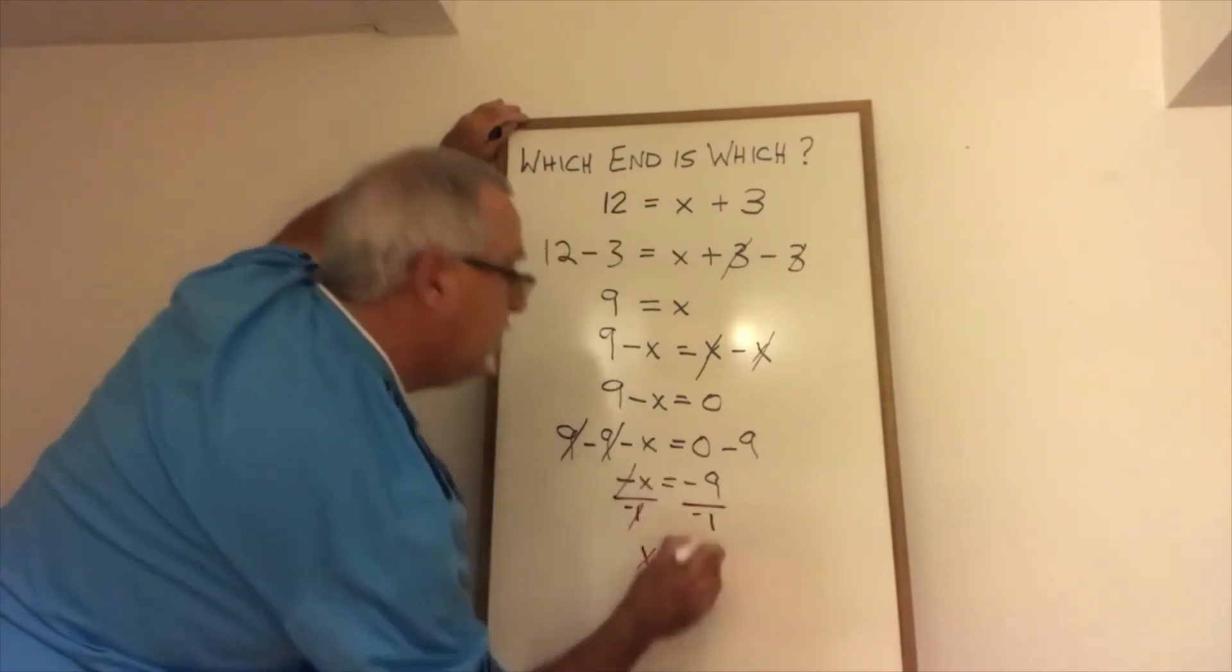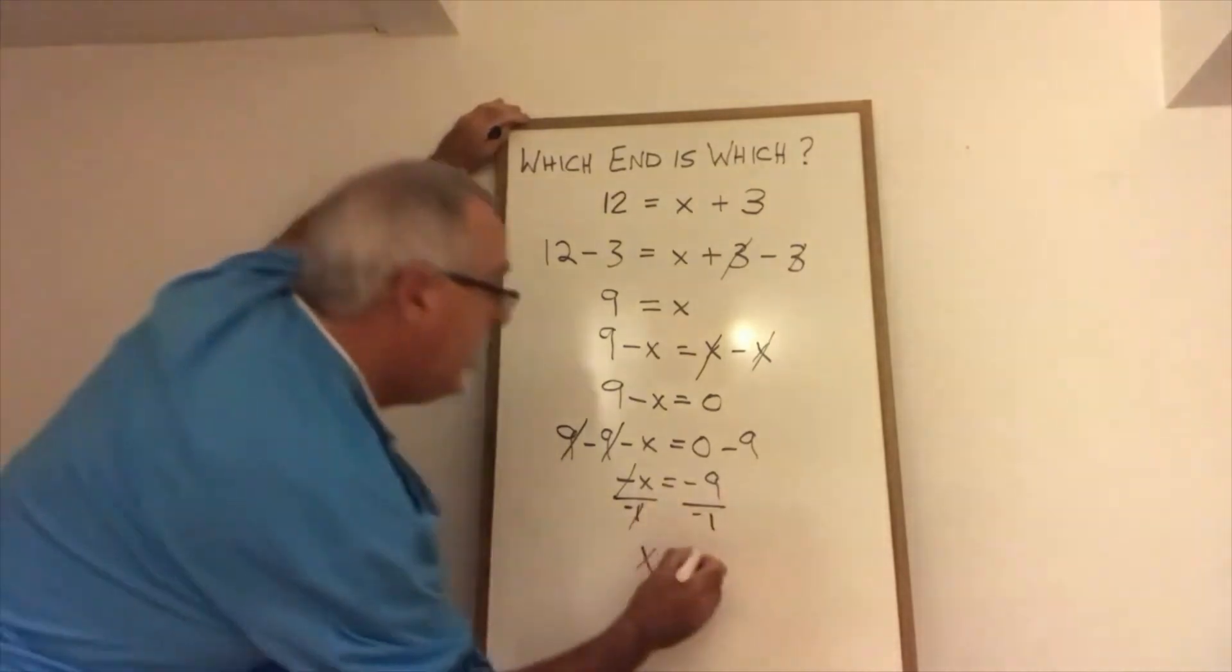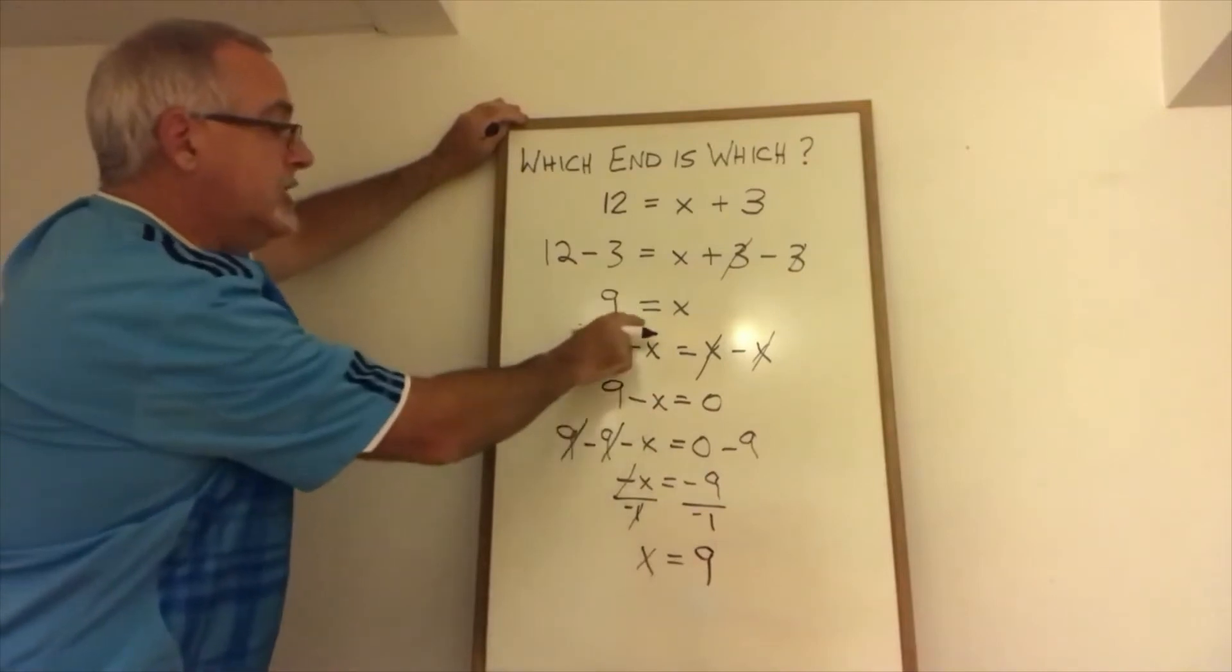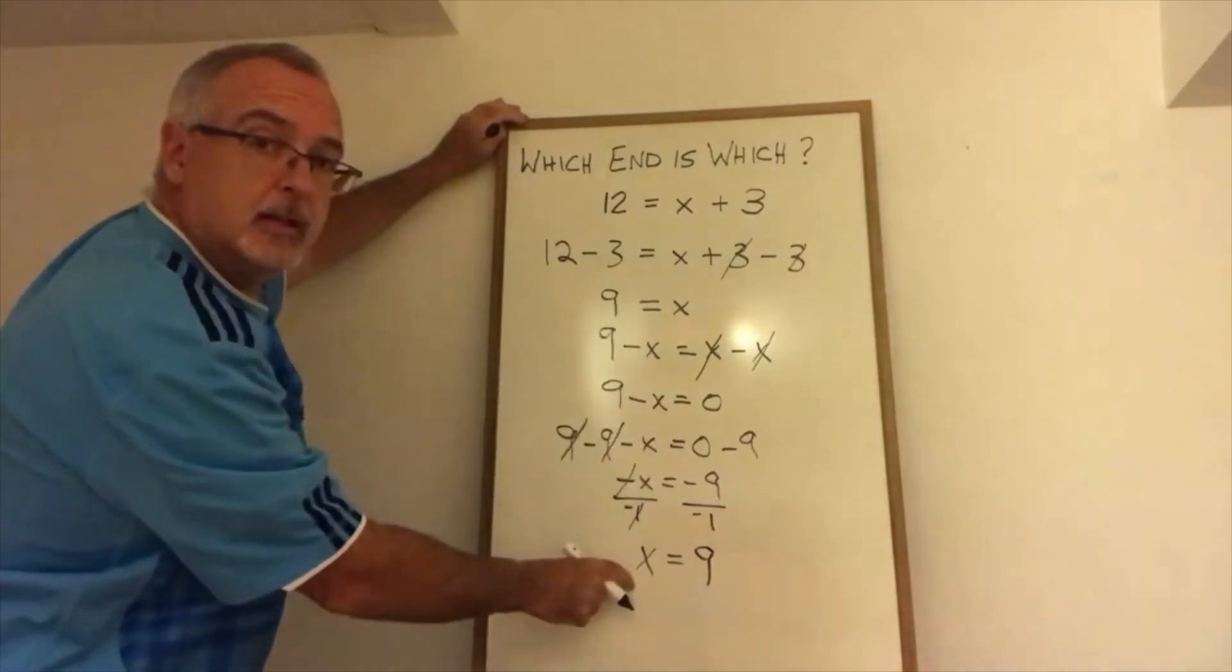These negatives cancel. The X is still there and it's equal to negative nine divided by negative one, which is positive nine. So that means that nine equals X means the same thing as X equals nine.